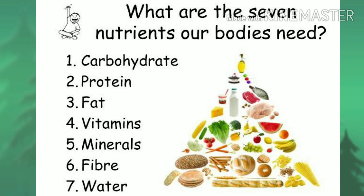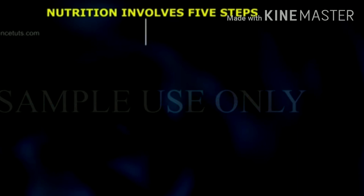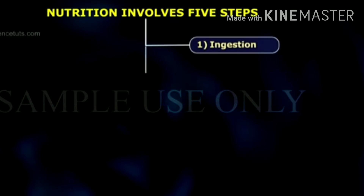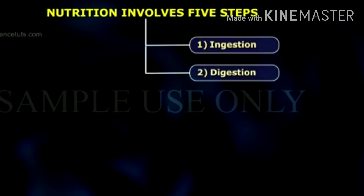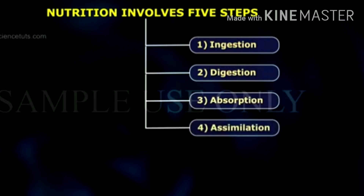Nutrition in man includes five steps. They are ingestion, digestion, absorption, assimilation, and ejection.